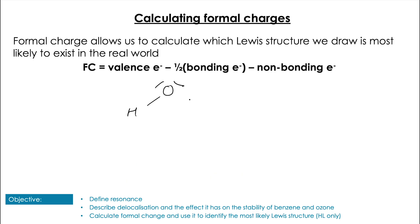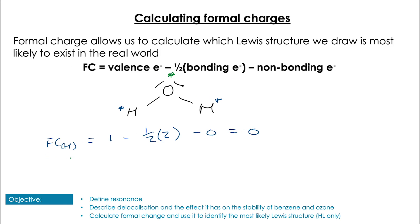Before you have a couple of goes yourself, let's look at water. For each hydrogen it's 1 minus half of 2 minus 0, which equals zero. For oxygen we have six valence electrons, two bonds so half of 4, minus 4 for the two lone pairs, which also equals zero. All atoms in water have a formal charge of zero.